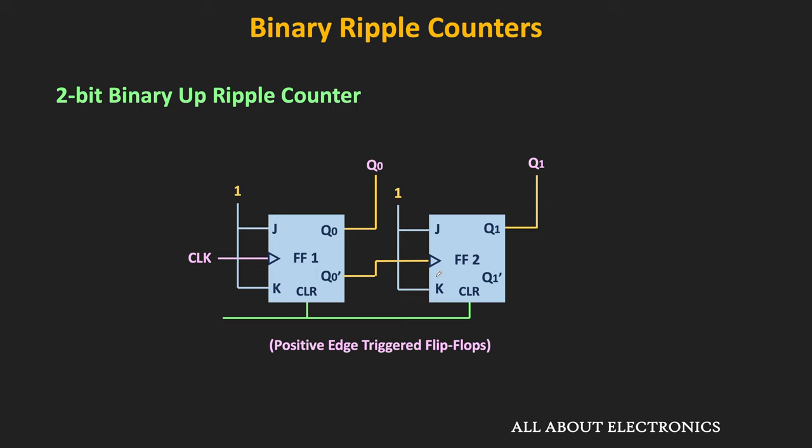The BCD ripple counter is another example: it counts from 0 to 9 and then returns to 0, making it a mod-10 counter with a modulus of 10. By using additional logic circuits with binary ripple counters, it is possible to design counters of a specific modulus. Moreover, by cascading such ripple counters together, we can also increase the modulus. In the next video, you will see how to design ripple counters with a specific modulus.